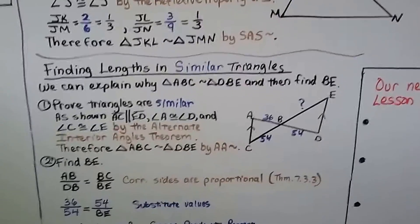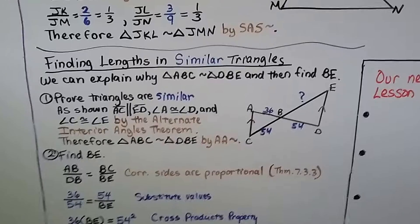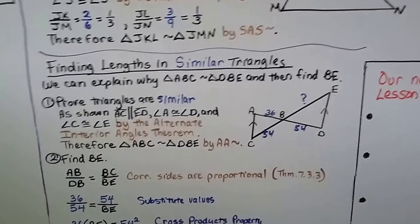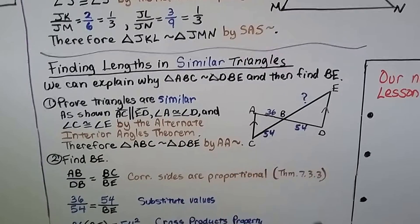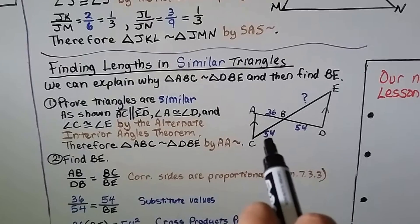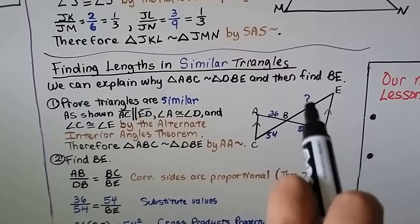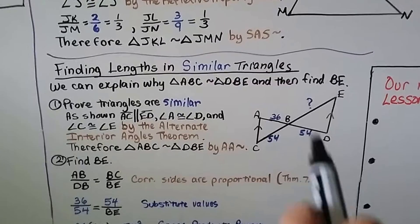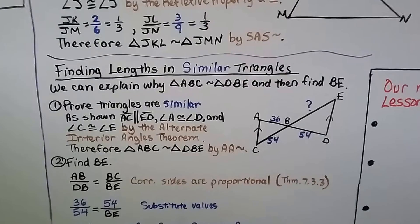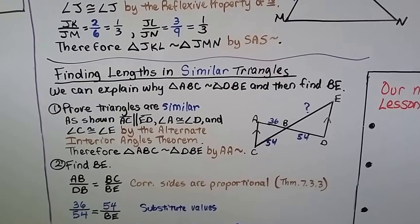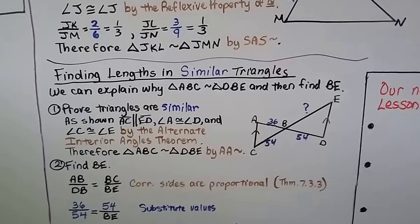Here's finding lengths in similar triangles. Let's look at the diagram first. We've got parallel lines. We can see that AB is a 36, CB is a 54 and BD is a 54, but we don't know what BE is. We can explain why triangle ABC is similar to triangle DBE, and then we can find BE.